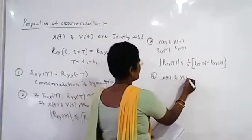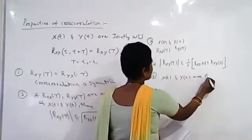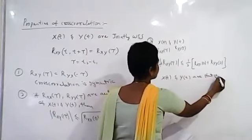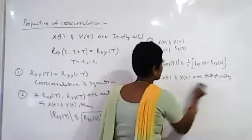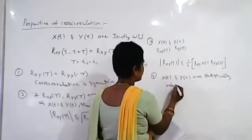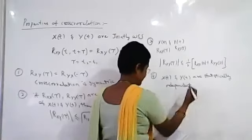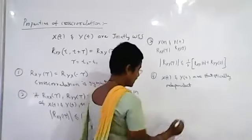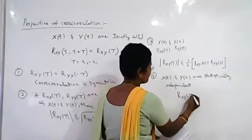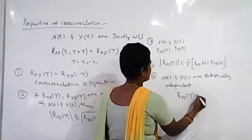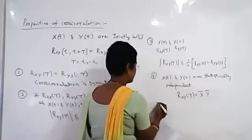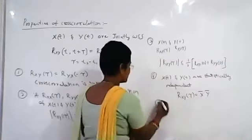The fourth property says that if x(t) and y(t) are statistically independent, then rxy(τ) is equal to x-bar times y-bar.